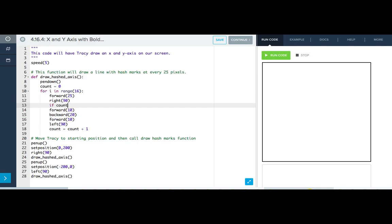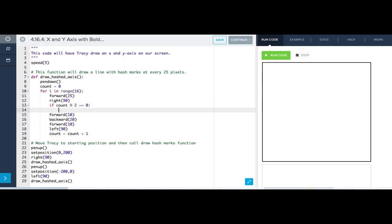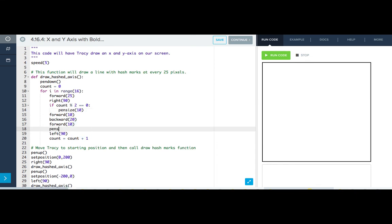If count modulus 2 is equal to 0, which means there's no remainder, which means it's even, I want the line to be bolded. So I'll write pen size 10. And after Tracy draws my hash mark, I want her to return back to her pen size of 1. Let's see how this works. Perfect.